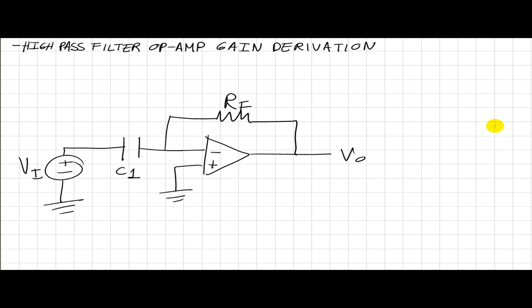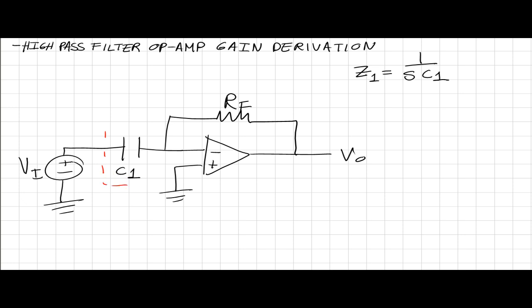Let's go ahead and analyze the gain of the high-pass filter. If you notice, the high-pass filter looks just like an inverting amplifier except for the capacitor. So let's go ahead and replace that capacitor with an impedance that I'm going to call Z1, and that's going to be equal to 1 over s*C1. I'm going to replace that into the circuit.